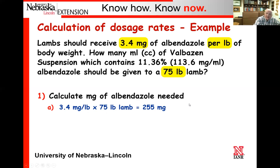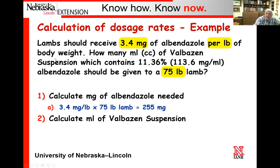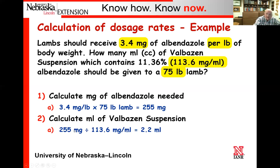The second step is to calculate how much of the actual suspension to incorporate. The key element is that 113.6 milligrams per milliliter — which is the same as 11.36%. So they've got 255 milligrams needed divided by 113.6 milligrams per mL, meaning they simply need to incorporate 2.2 milliliters of material. I would run through a few examples in terms of how to properly calculate a dosage rate.